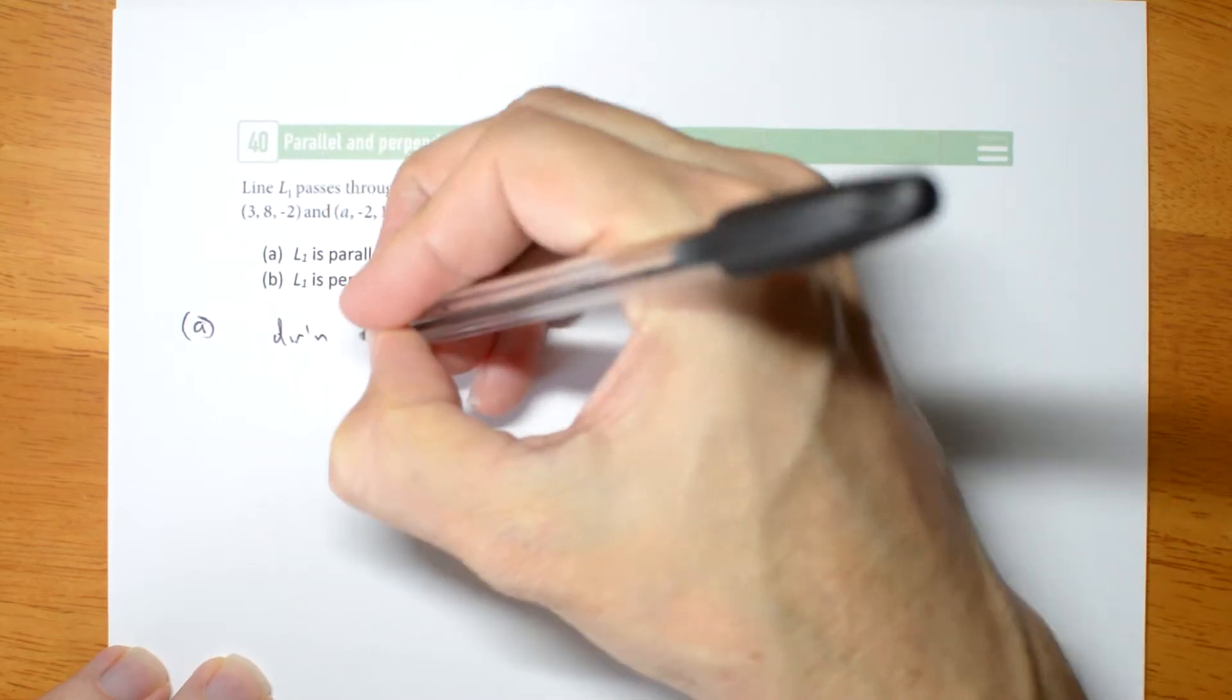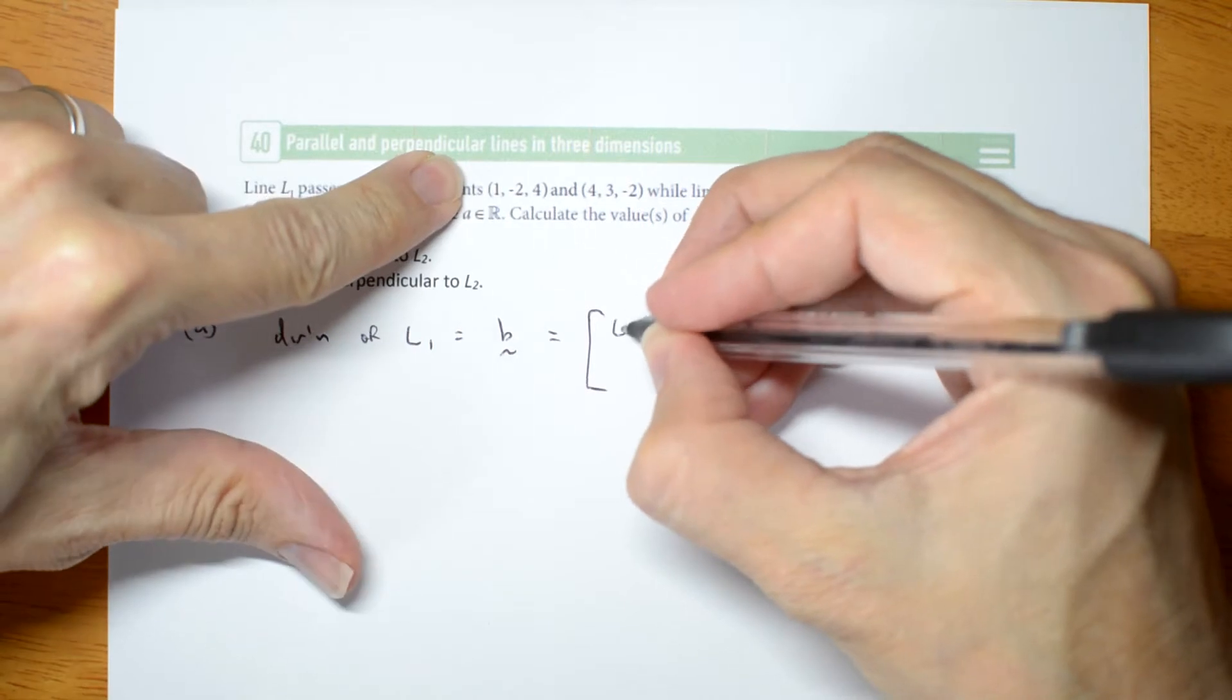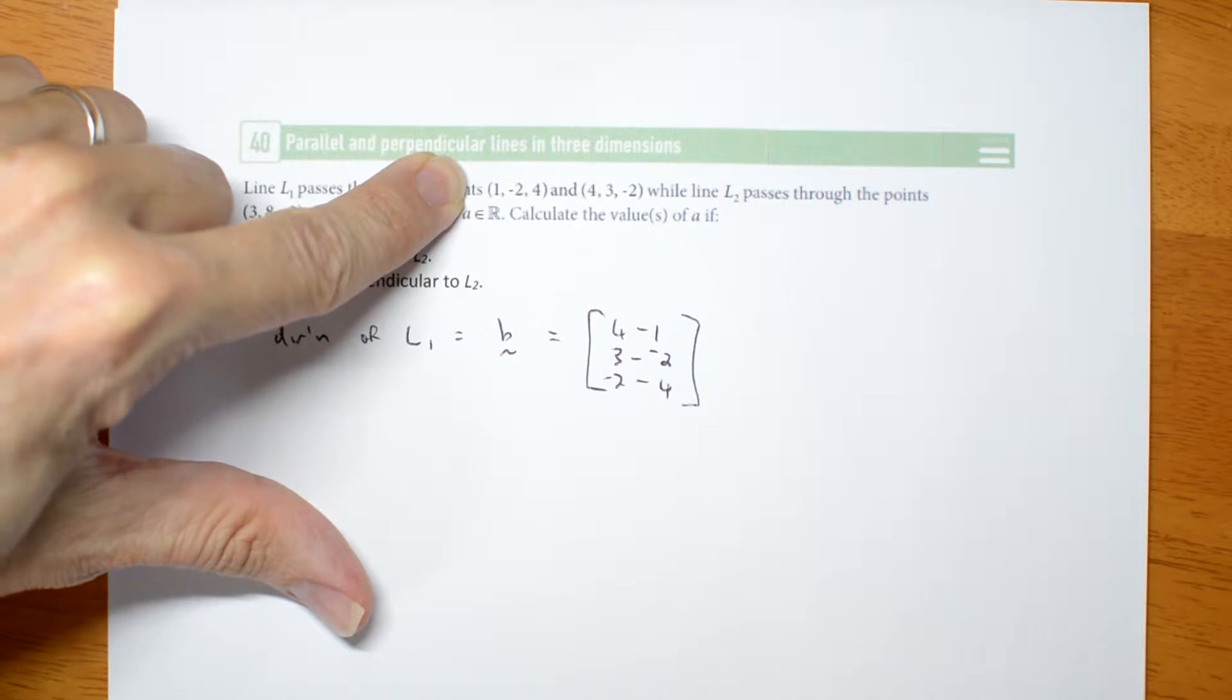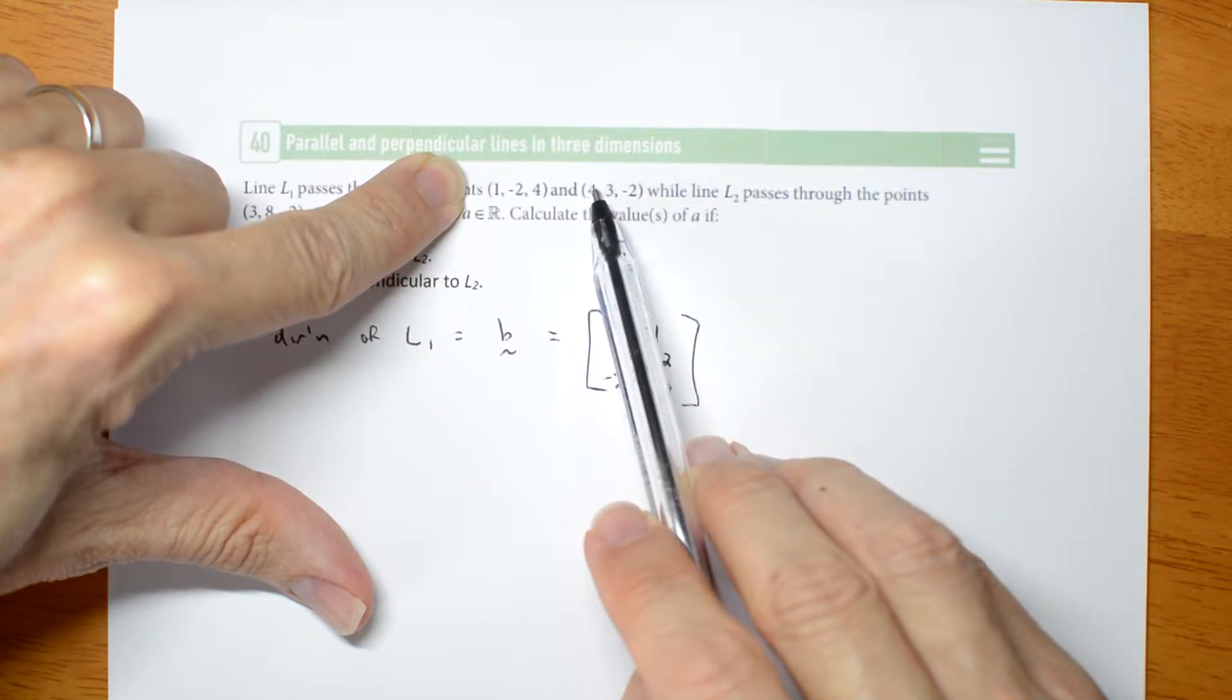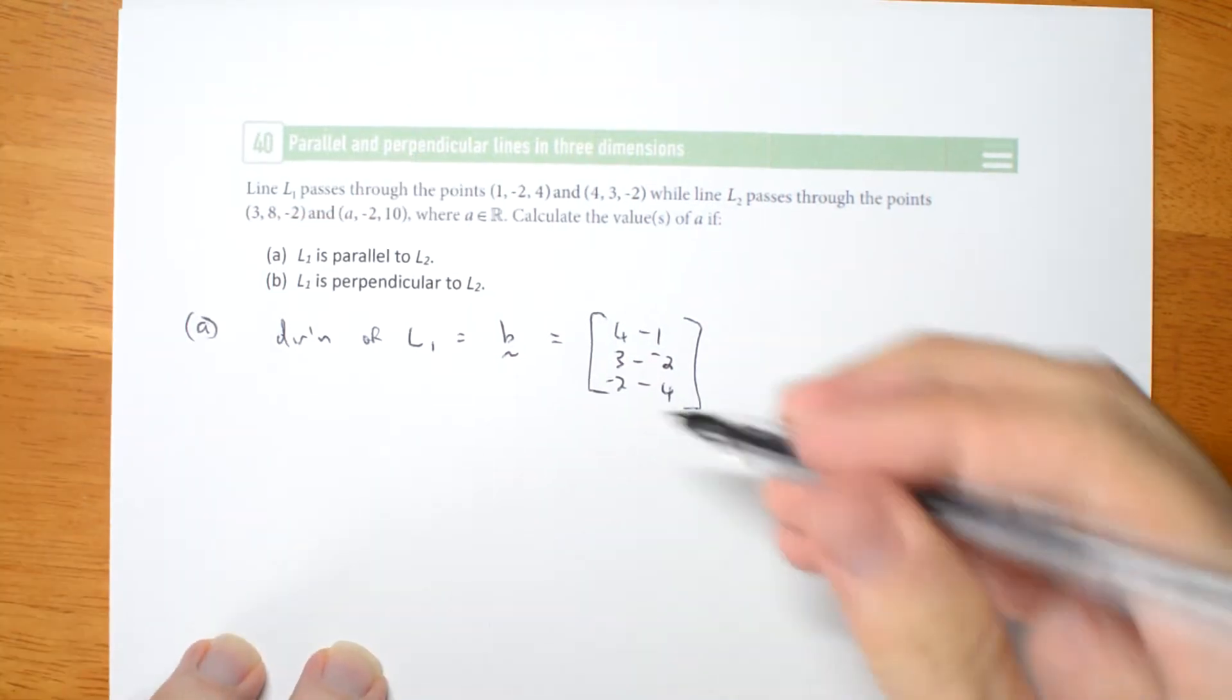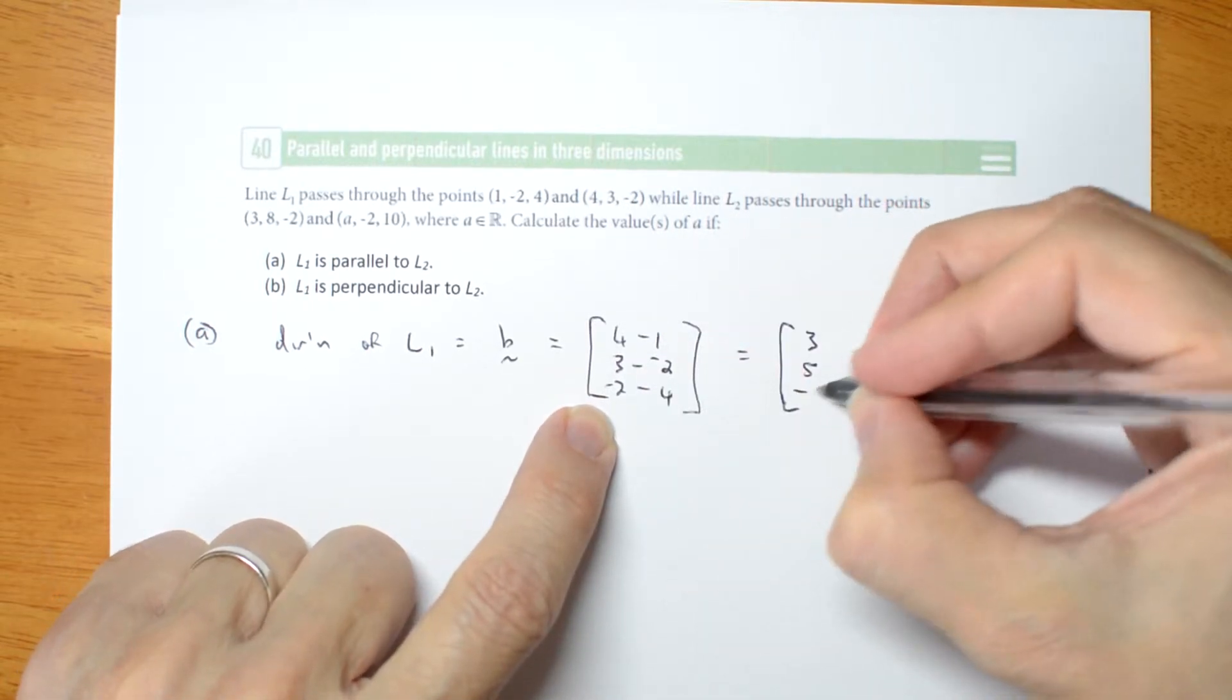So the direction of L1 is given by vector B, what we'll call B, and it's these subtracted. It's 4 minus 1, 3 minus negative 2, negative 2 minus 4. Now be careful with the textbook version. They've got a different set of answers because although they write 4 here, when they actually tried to calculate with it, they changed that 4 into a 5. I'm going to use 4 here. If you want to see what happens with a 5, go and look at the textbook. This vector is 3, 3 plus 2 is 5, and negative 2 take 4 is negative 6.